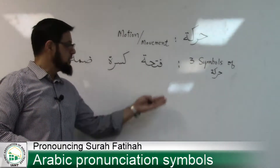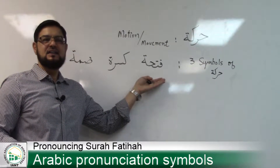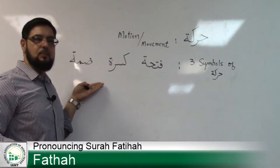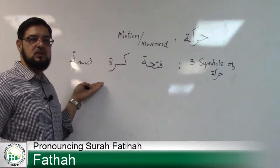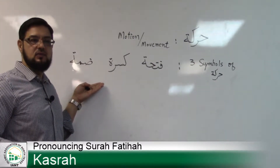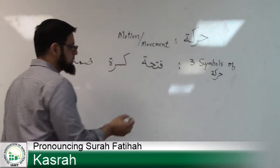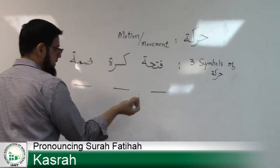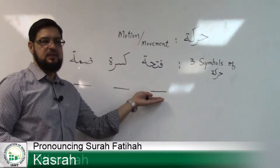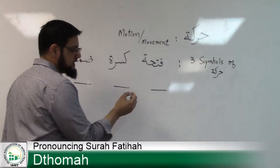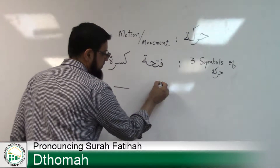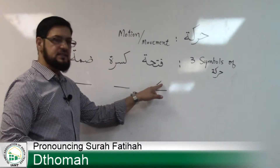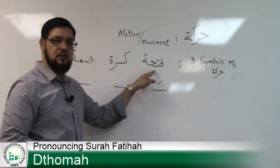Three symbols of Haraka: the first one is Fathah, the second is Kasra, the third is Dhammah. How do they look? For example, take an Arabic letter — it may be Alif, it may be Ba, any letter. If there is a slanting slash at the top, this is called a Fathah. A slanting slash at the top of a letter is called Fathah.